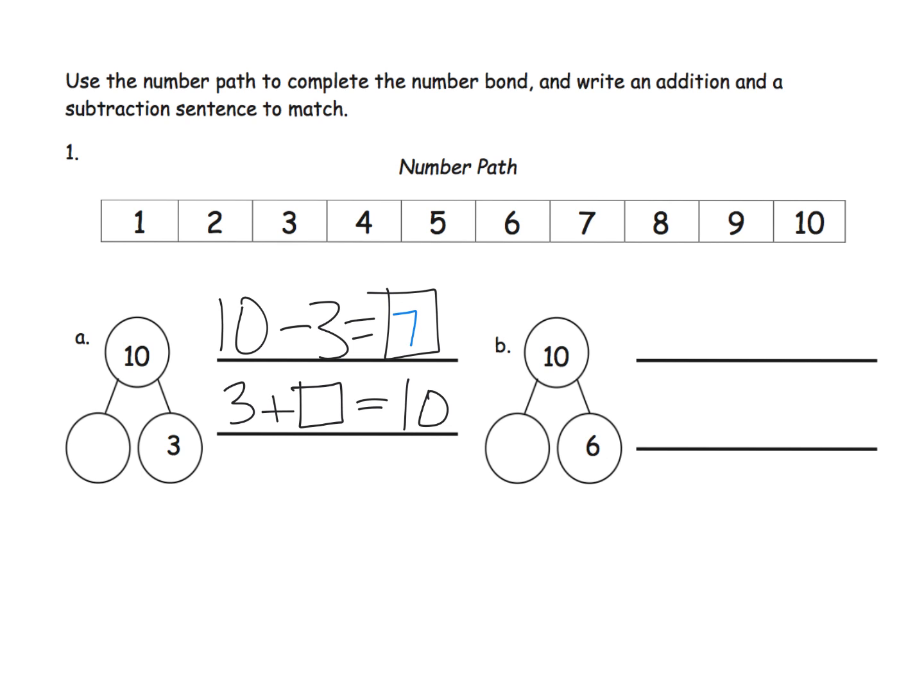Now if we wanted to, we could have started at 3 and counted up to 10. So start at 3 and then go 1, 2, 3, 4, 5, 6, 7. The answer is 7. So that's another way we could have figured it out. But I think in this case, the counting backwards method is probably easier, don't you think?